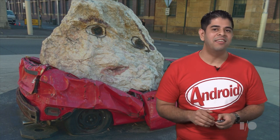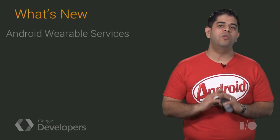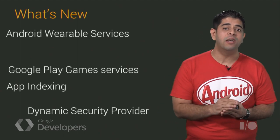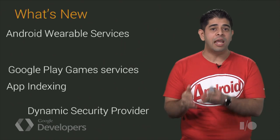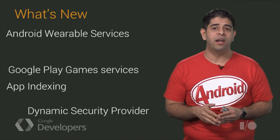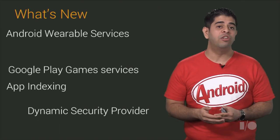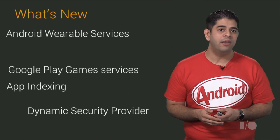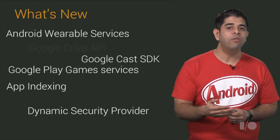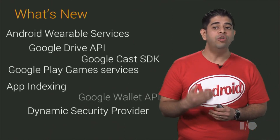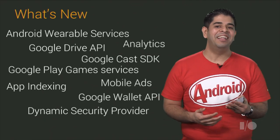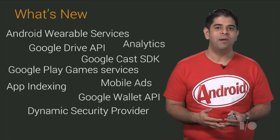Let's look at the latest additions in Google Play Services 5.0. It's one of our biggest releases to date, including new APIs like Android Wear, the Dynamic Security Provider, a major set of additions to Google Play Game Services, and the App Indexing API. We've also added new APIs for Google Cast, Google Drive, Google Wallet, Analytics, and Mobile Ads.